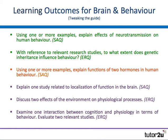The last learning outcome in the guide on physiology and behaviour is one on using brain imaging technology. This is really something I feel can be left till the end as a big overview. Instead, I've moved in the question on to what extent does genetic inheritance influence behaviour.